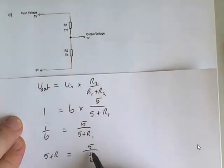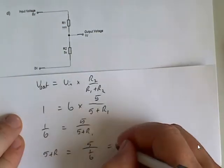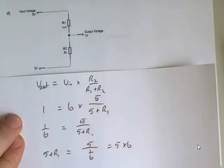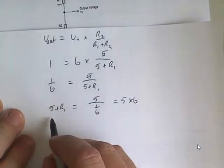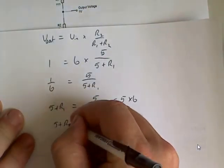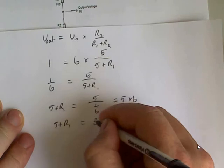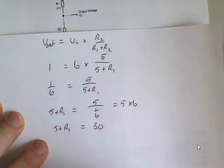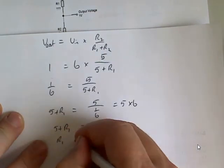Now 5 divided by 1 sixth is the same as 5 times 6. You can see it's already getting easier. So we've got 5 plus R1 equals 5 times 6 is 30. Subtract 5 from both sides. R1 equals 25.